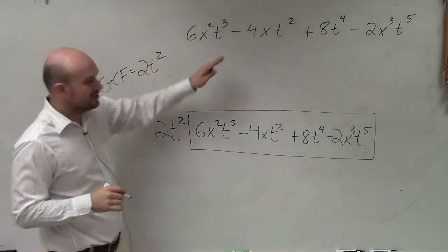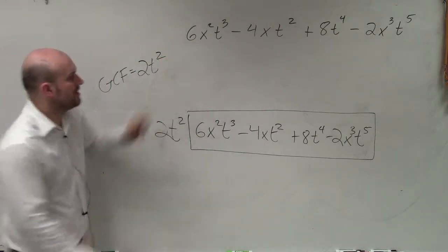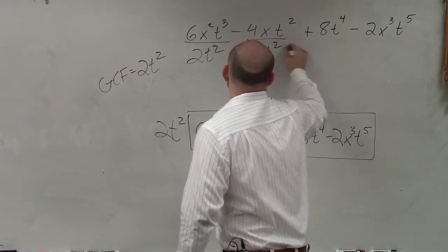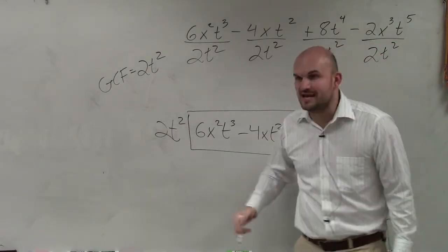And what you're basically going to do is identify is you're basically going to divide 2t squared by every one of these terms. So you can think about it that way. Or you guys can think about it and say,